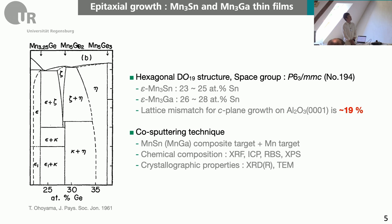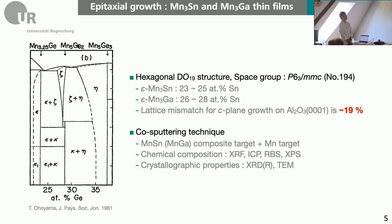We used conventional sputtering technique, and because we have to be really precise about the composition, we double, triple, and quadruple checked the chemical composition of our thin films using XRF, ICP-OES, Rutherford backscattering, and XPS. For crystallographic properties we utilized XRD, XRR, and TEM.